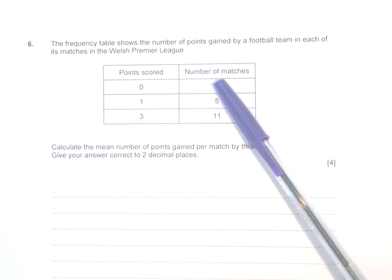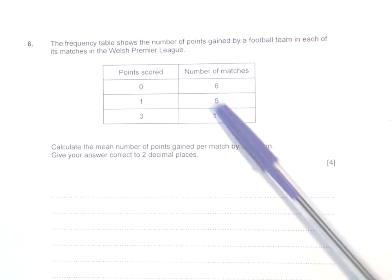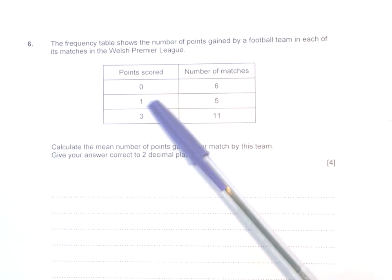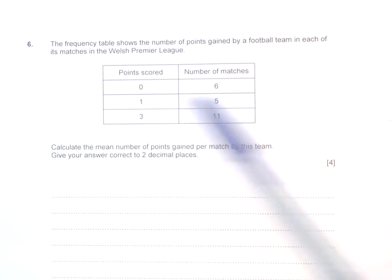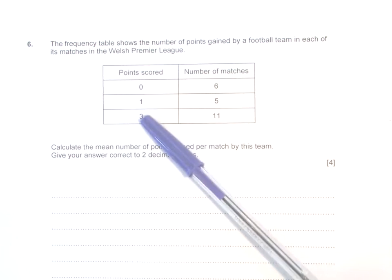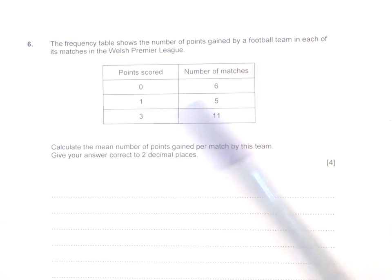You can see from the table: six matches where no points were scored, so they lost those games; five games where they got one point, so five draws; and eleven games that they won, giving them three points for each of those games. It says calculate the mean number of points gained per match by this team. Give your answer correct to two decimal places.